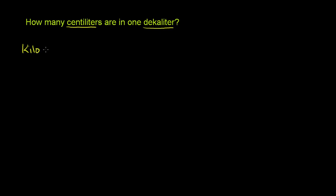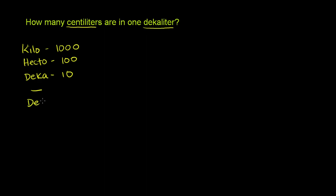I'll write the prefixes down — you should have these memorized, because you're going to see them over and over again for different types of units. The prefix kilo means 1,000. Hecto means 100. Deca means 10. If you have nothing, that just means 1. Deci means 1 tenth. Centi means 1 hundredth. And milli means 1 thousandth.